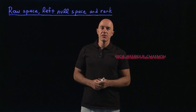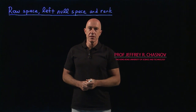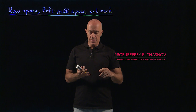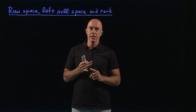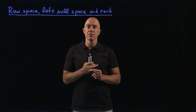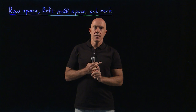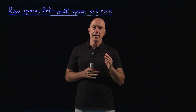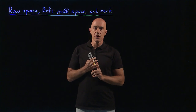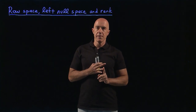I want to finish the discussion of the fundamental vector subspaces of a matrix. We've talked about the null space — the vectors x such that Ax equals 0 — and we've talked about the column space, the vector space spanned by the columns of the matrix. Now there are two more subspaces called the row space and the left null space.